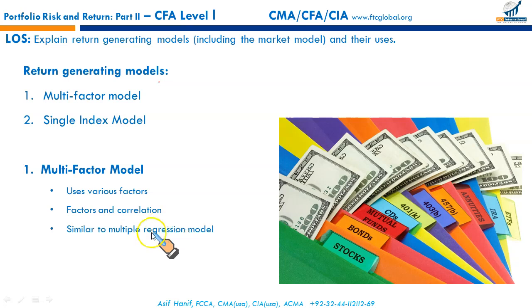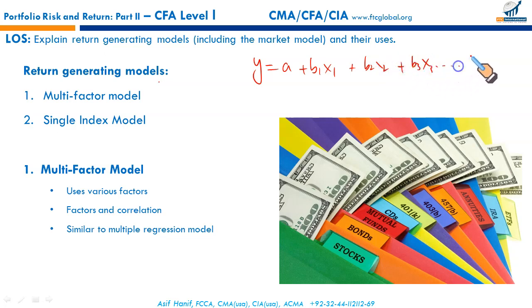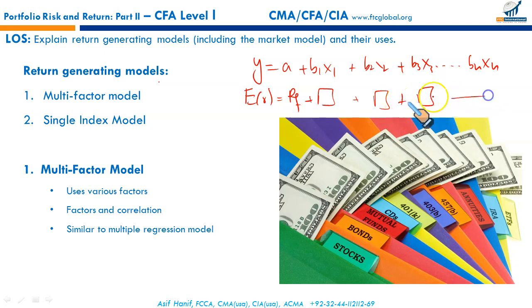It is more or less like a multiple regression model: y = a + b1*x1 + b2*x2 + b3*x3 + ... + bn*xn. In this context, it becomes: expected return equals the risk-free rate plus various factors with their coefficients.